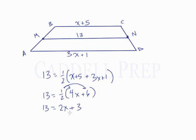And now we solve for x. So let's subtract 3 from both sides. We get 10 equals 2x. Divide both sides by 2. And we get that 5 equals x.